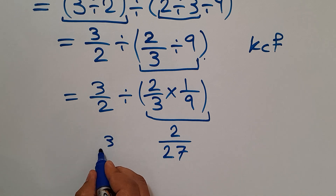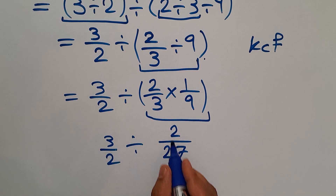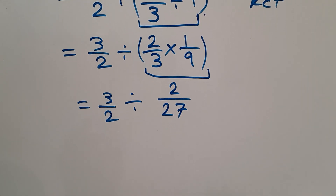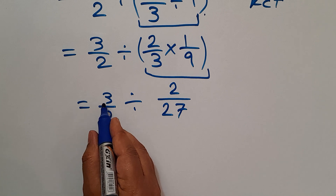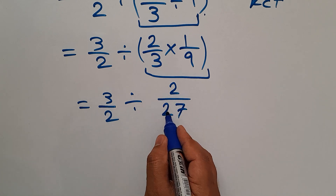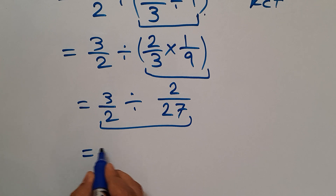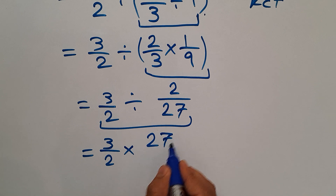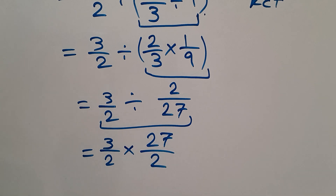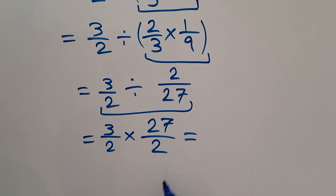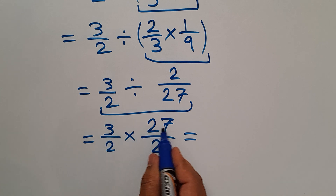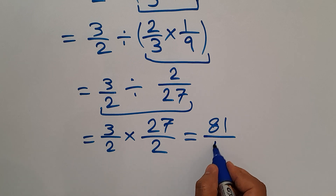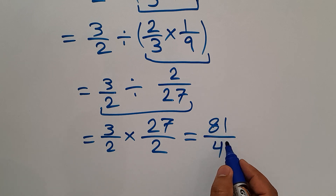Now we have 3 over 2 divided by 2 over 27. Again, according to the KCF rule, 3 over 2 divided by 2 over 27 can be written as 3 over 2 times 27 over 2. This equals 3 times 27, which is 81, over 2 times 2, which is 4. So the result is 81 over 4.